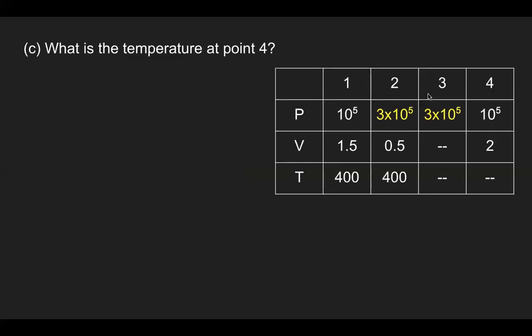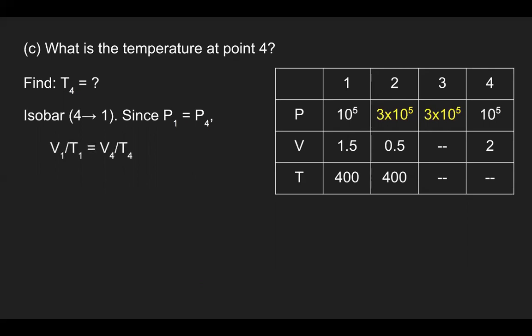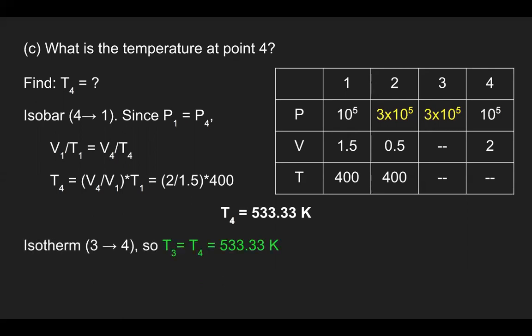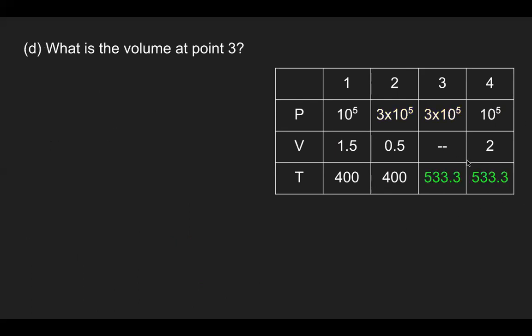The next part asks for the temperature at point four. Looking at the isobar from four to one, pressure remains constant, so we use V1/T1 = V4/T4. Solving for T4 gives 533.33 Kelvin. Since three to four is an isotherm, T3 must equal T4, so the temperature at point three is also 533.33 Kelvin — filling in those two slots in the chart.